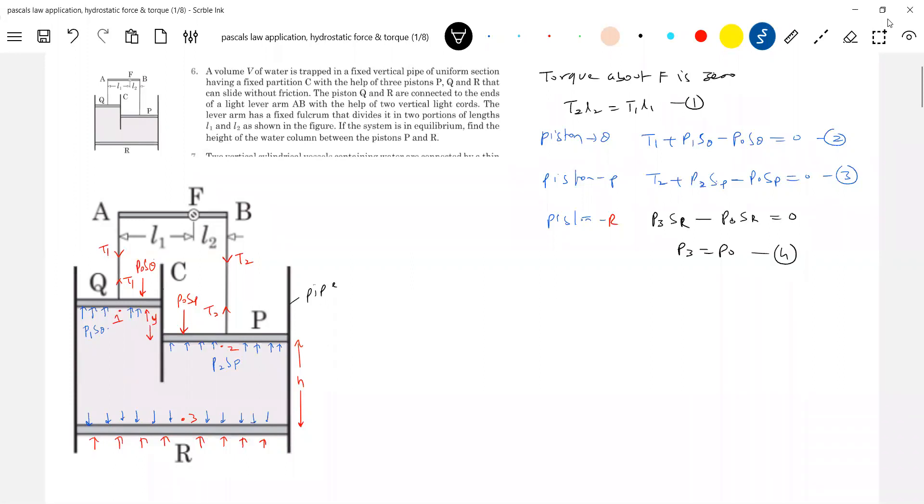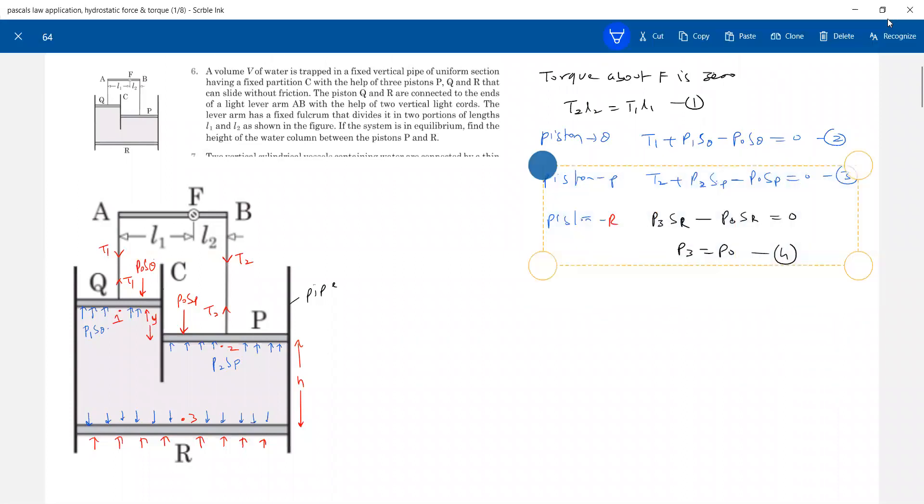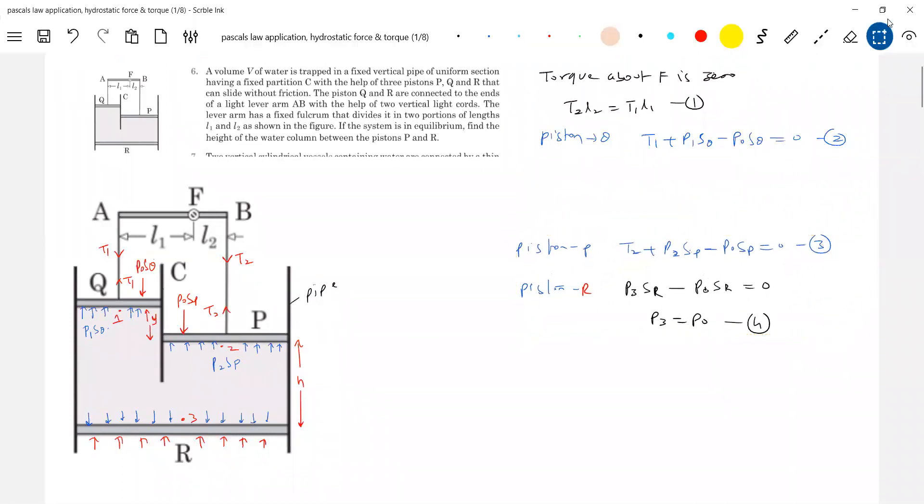Okay, this T1 you can also write as P0 - P1. Tension T2, what can you write? We can also write, I think I'll make the problem this much. What you could have thought, okay let's write expression for T1. So what is T1 equal to? P0 - P1 times Sq.